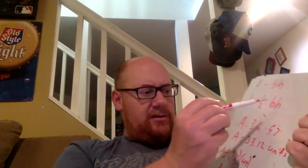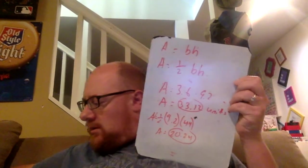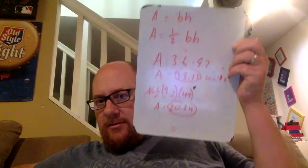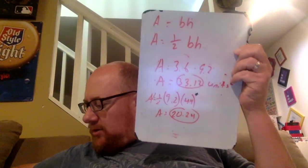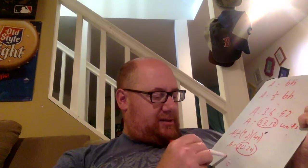These are the two numbers that you want, because now you have to add them together. So 33.12 plus 20.24 equals 53.36, but it says round to the nearest tenth, so 53.4 units squared.